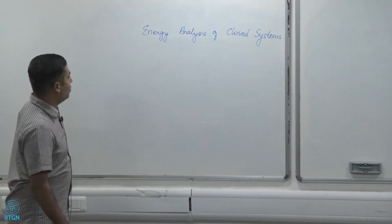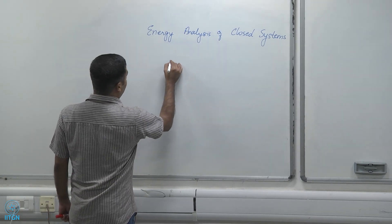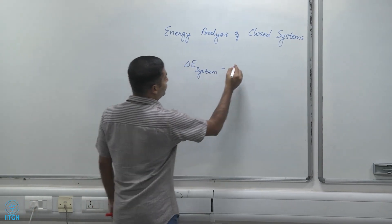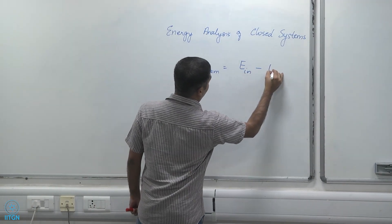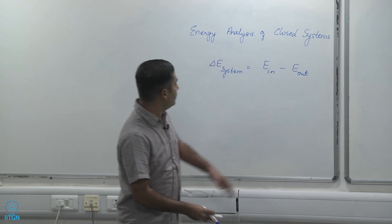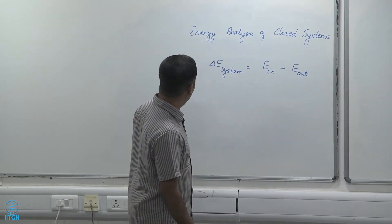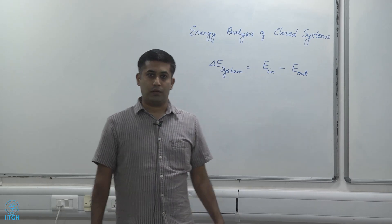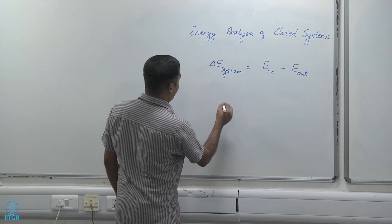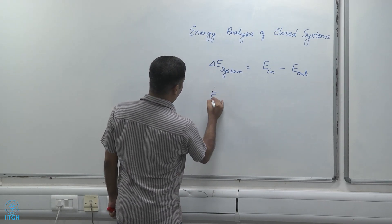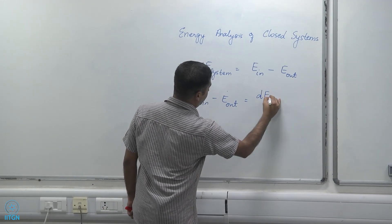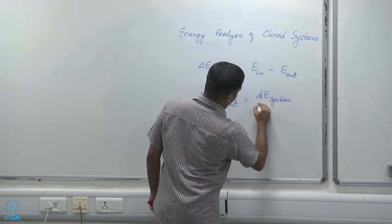As we had seen earlier, we now know that delta E of a system is equal to E_in minus E_out. That is, energy coming into a system minus the energy going out of a system should equal the change in energy of the system. I can also write this in rate form as E_dot_in minus E_dot_out equals dE_system/dt.